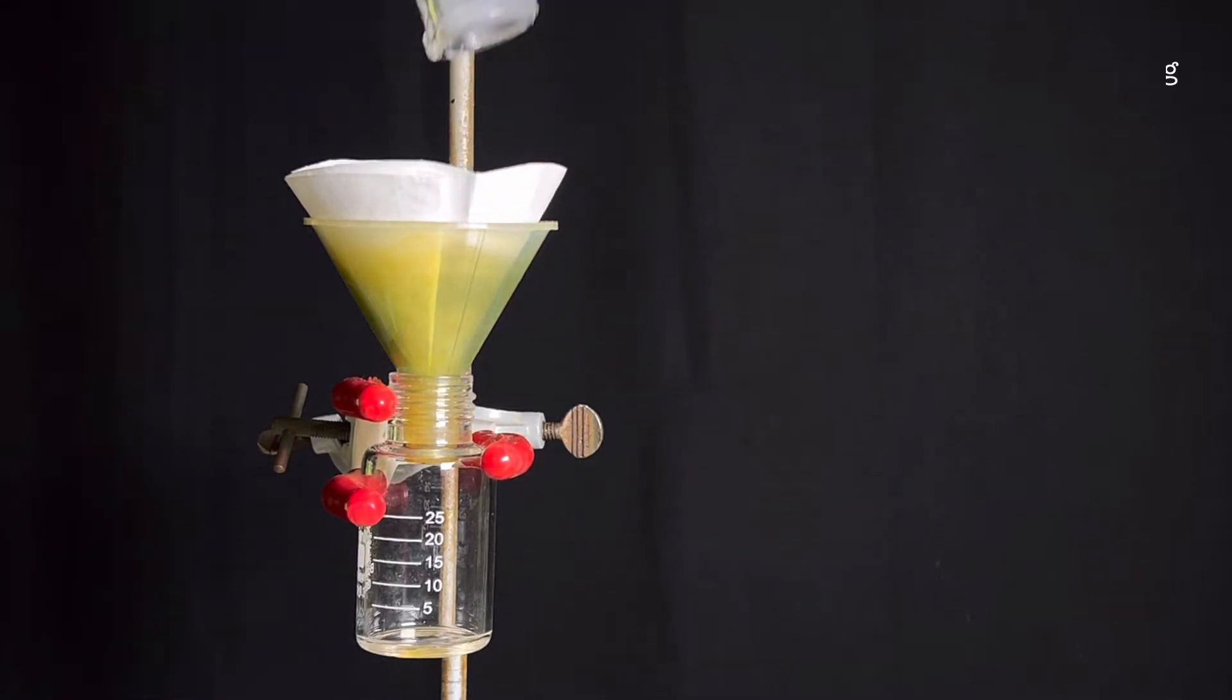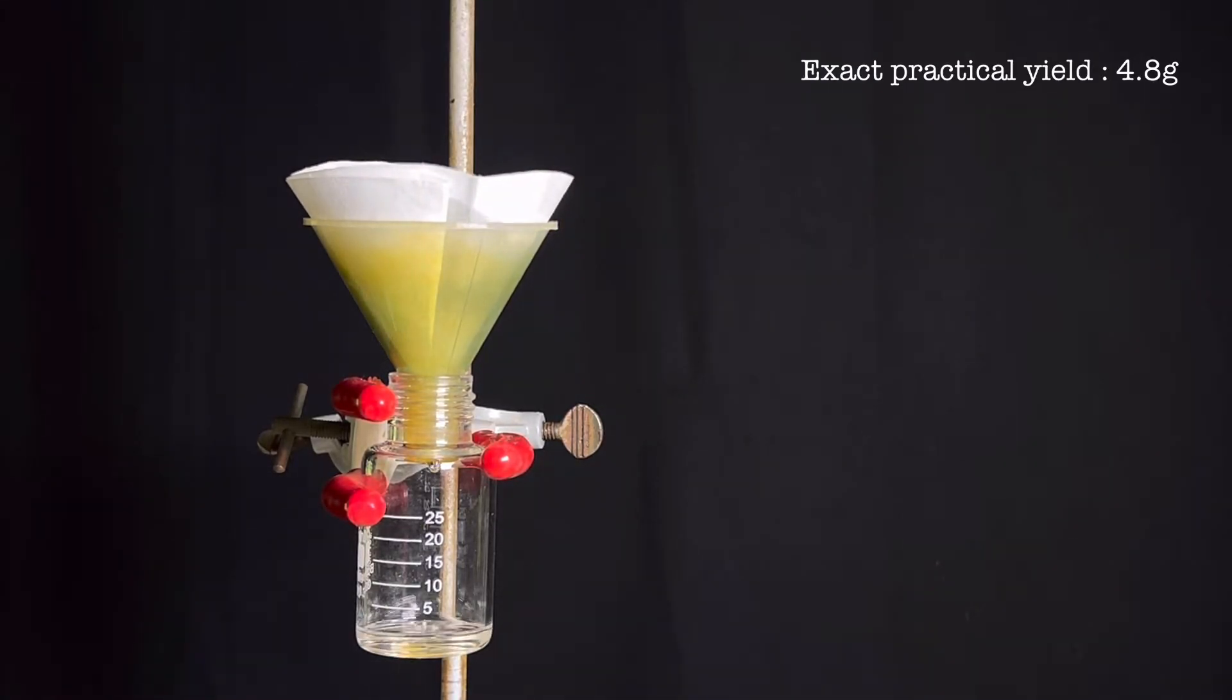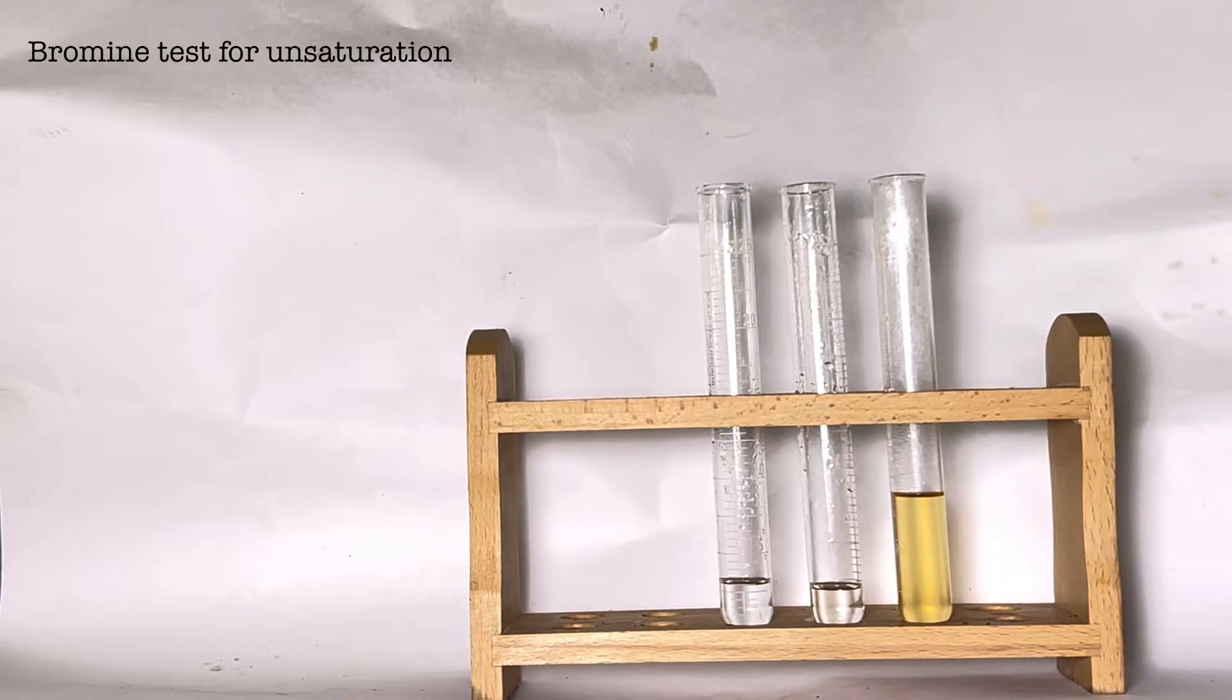Now using a funnel and a filter paper, the product was drained into a small glass vial for storage. The final product I received was 5 grams. Now we will do a simple test to confirm the presence of unsaturation.